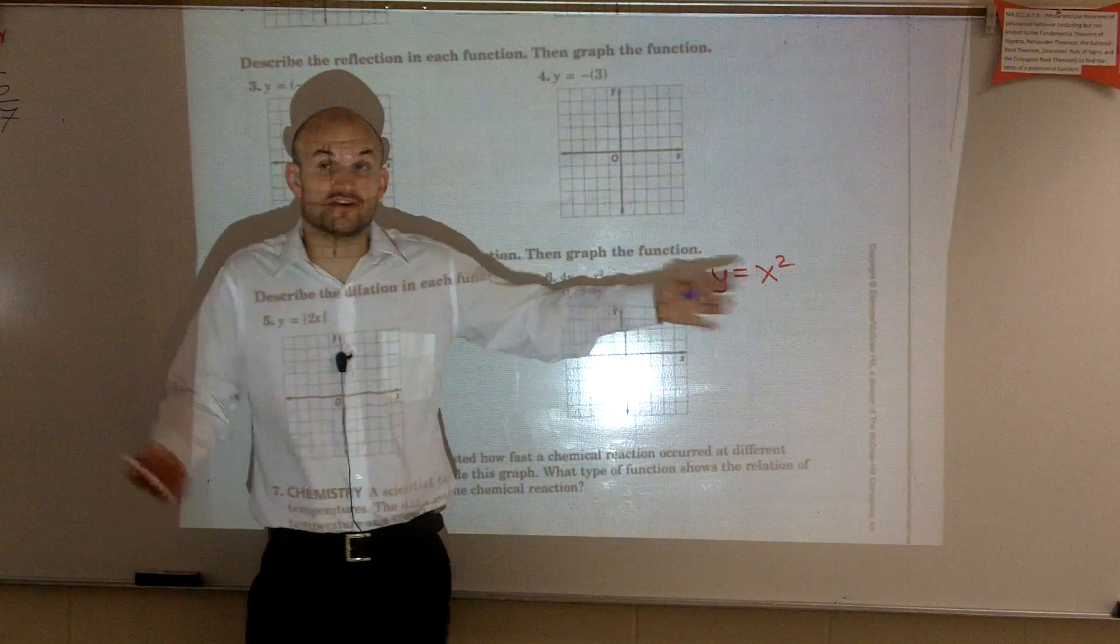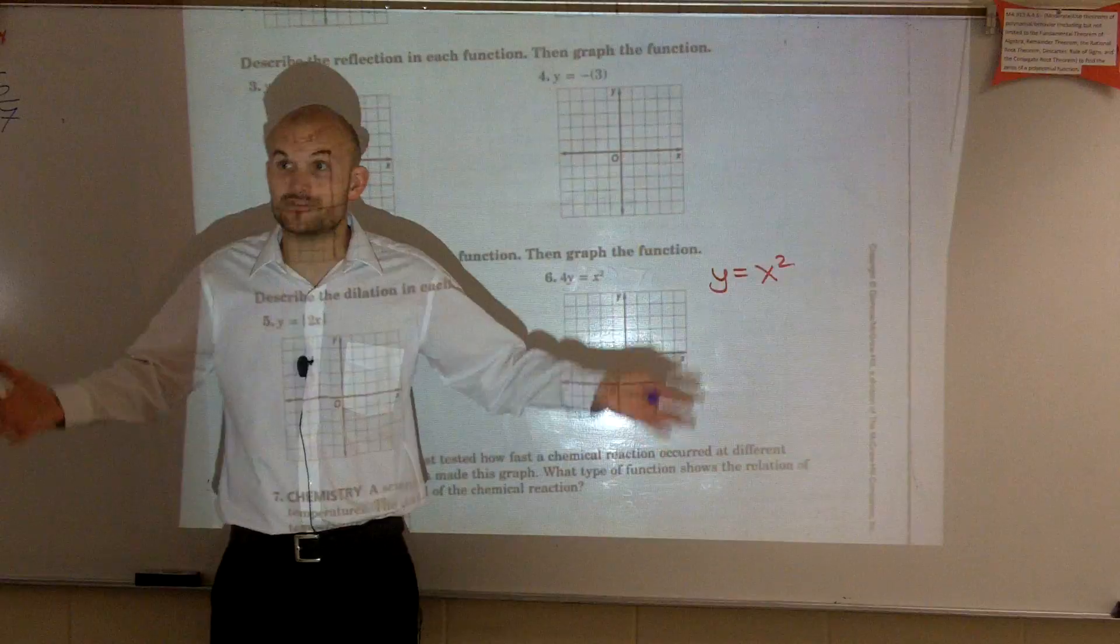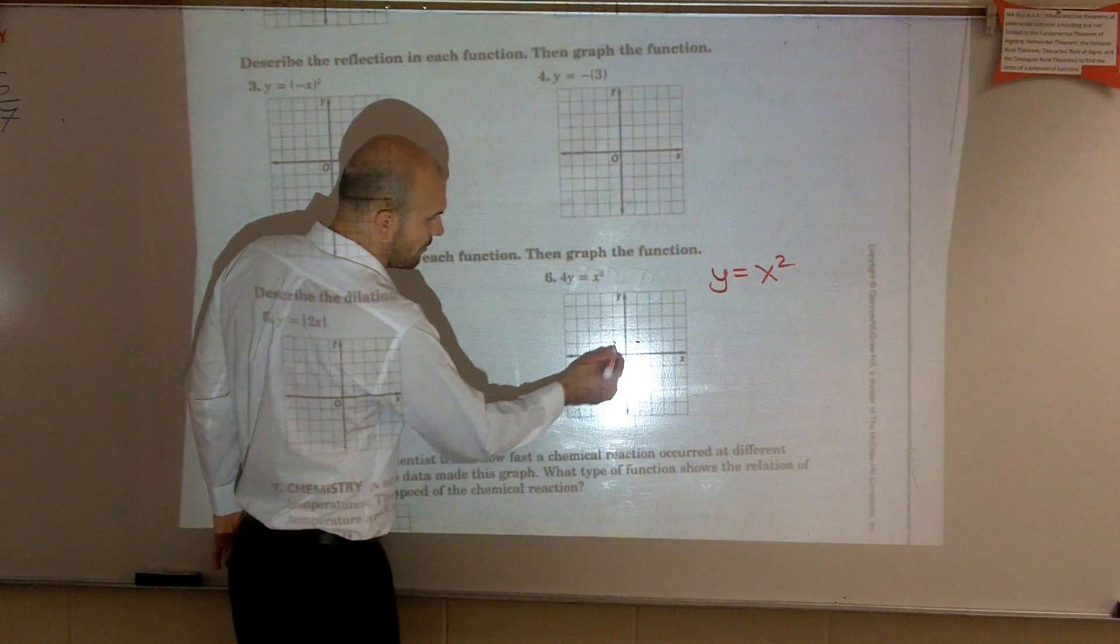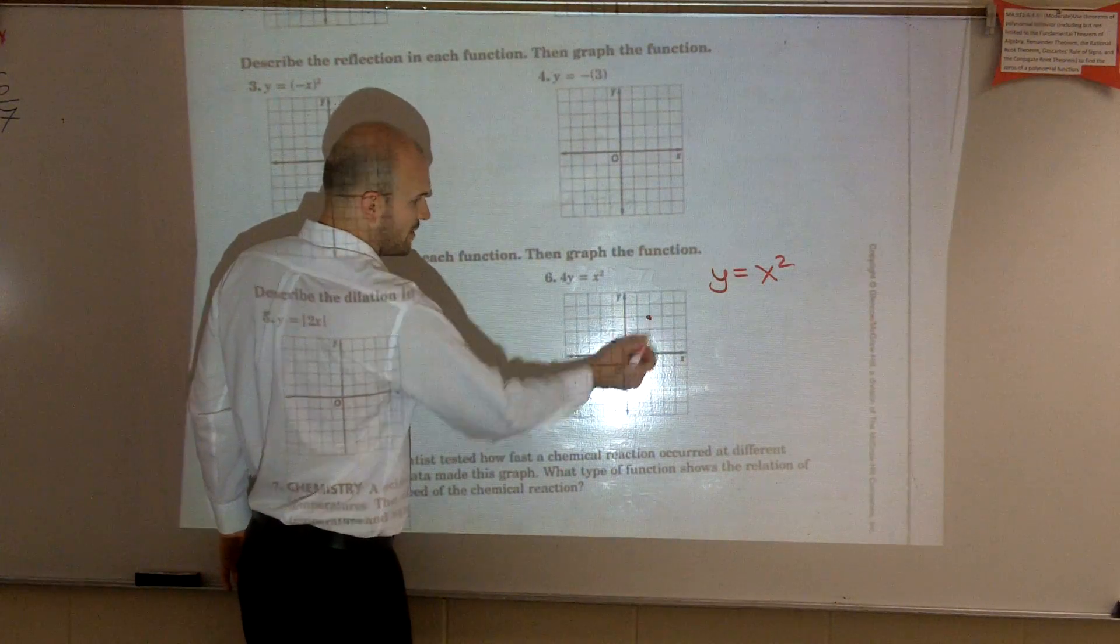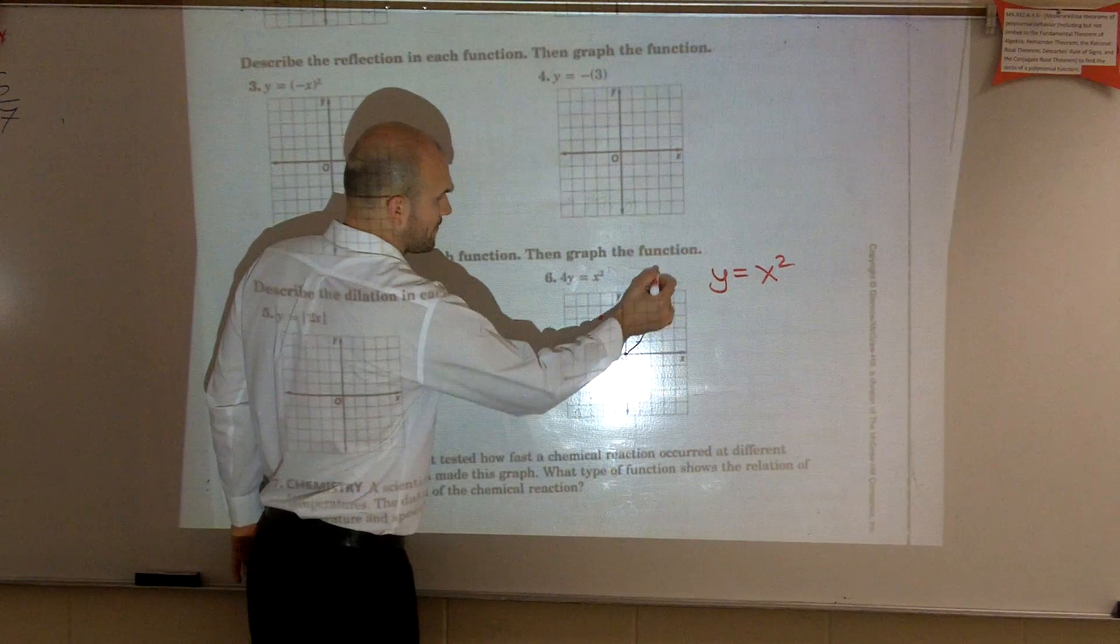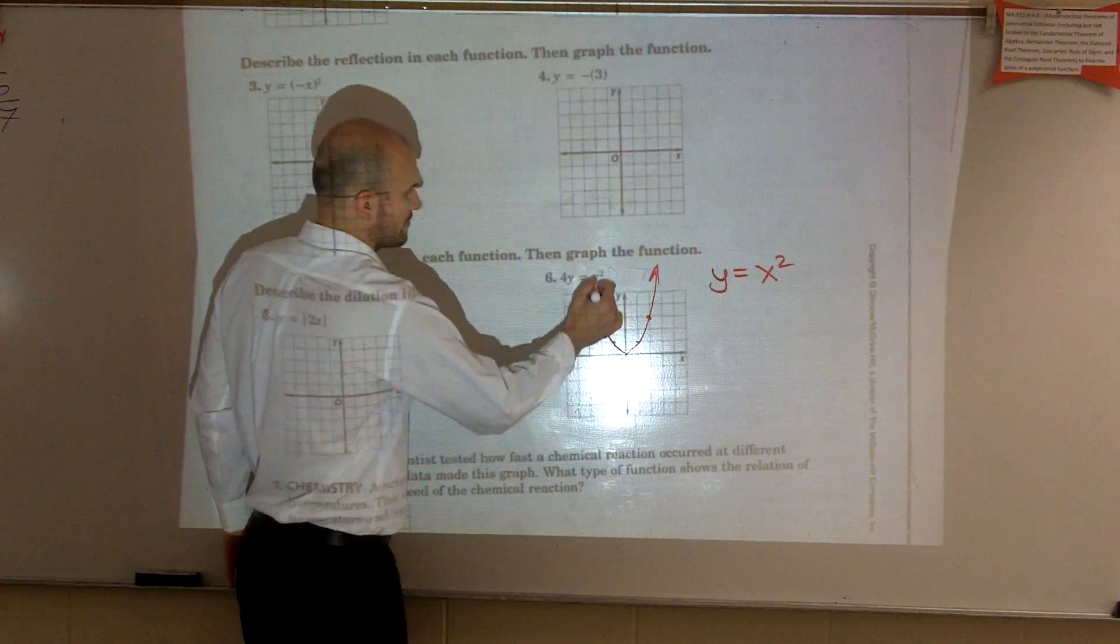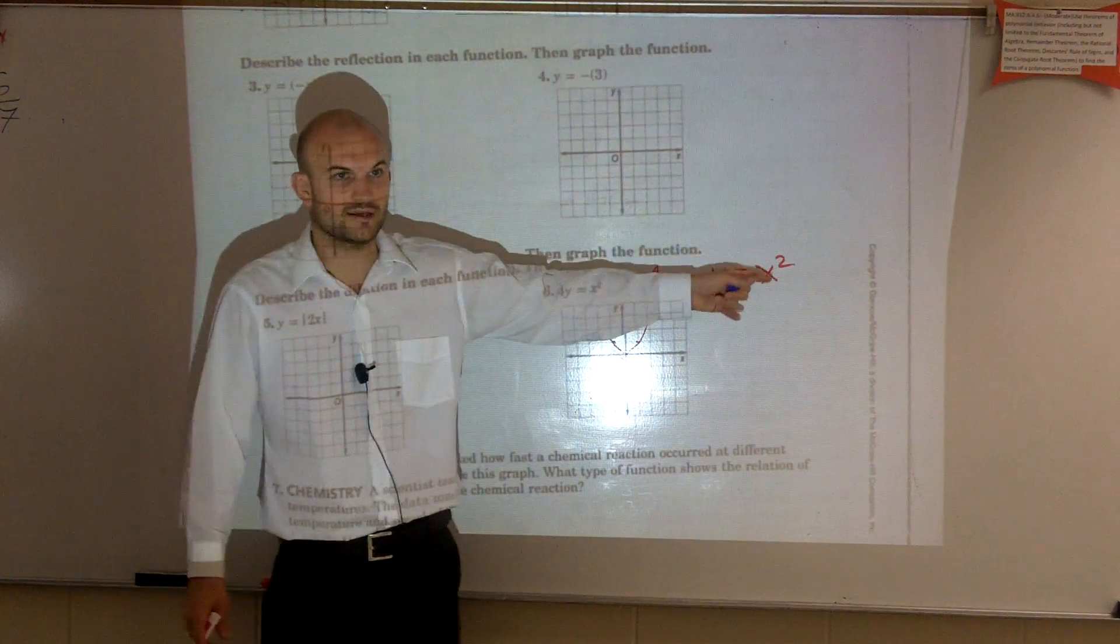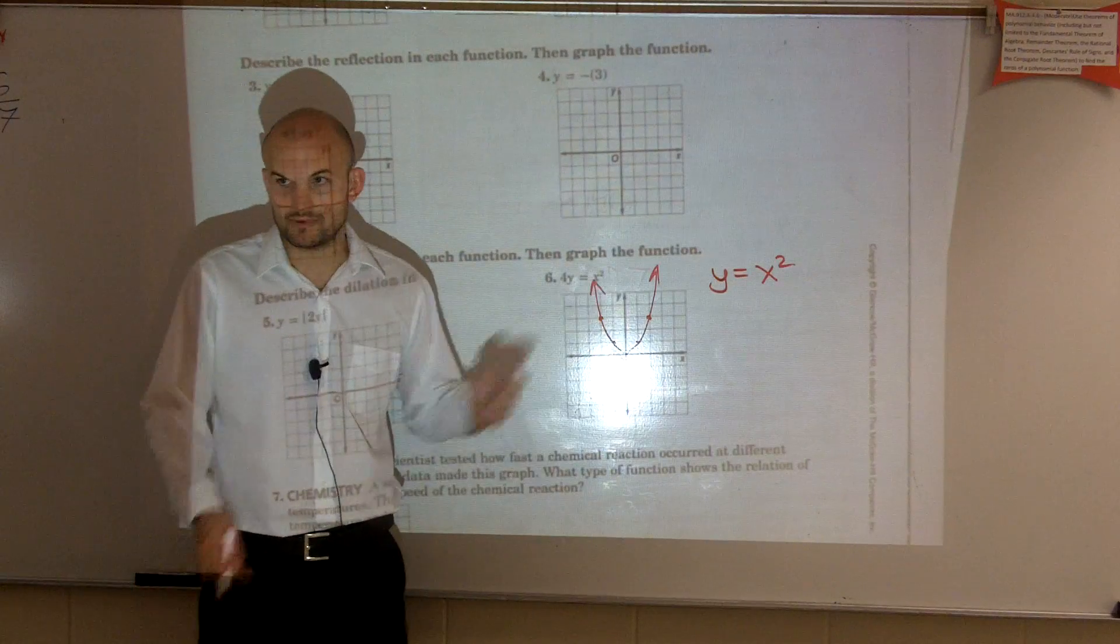So this is your parent function. First of all, if you guys are going to graph it, you still even have to know what the parent function looks like. The parent function crosses at 1 comma 1, 2 comma 4, negative 2 comma 4. Okay? That's the parent function.